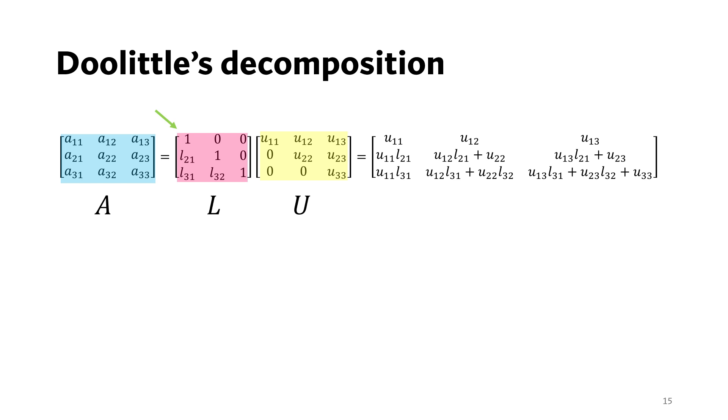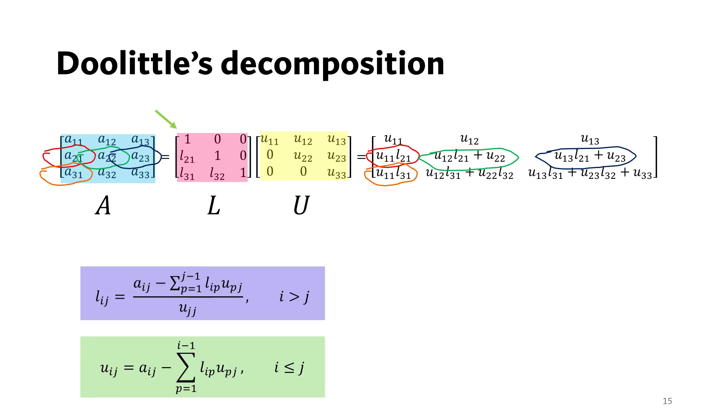The product of the lower and upper triangular matrix is the matrix on the right. We can compute the elements of the lower and upper triangular matrix by equating the corresponding elements of this right side matrix with the coefficient matrix A.